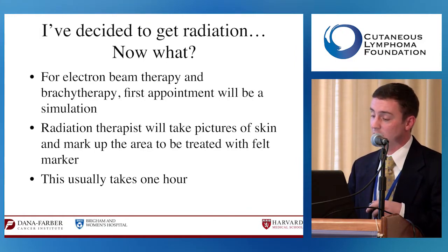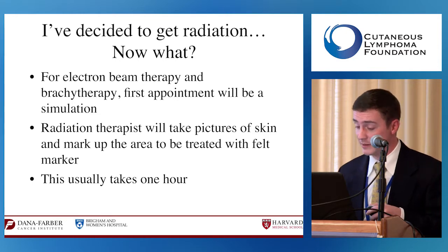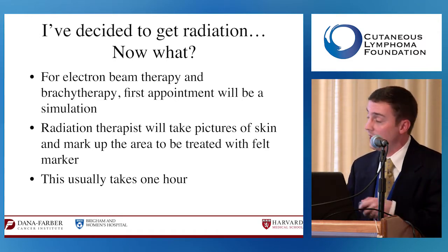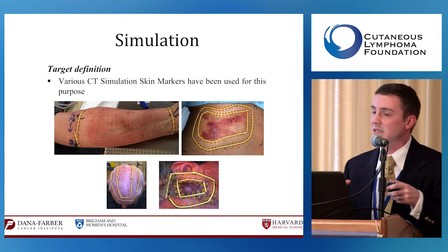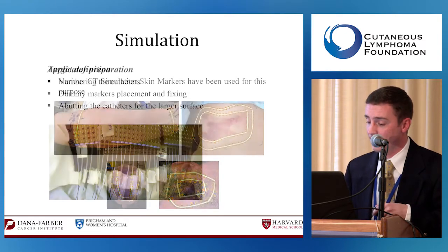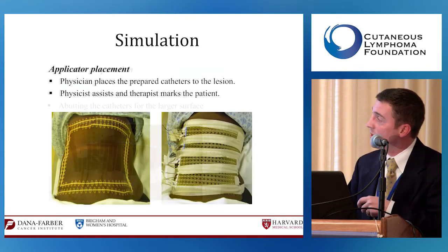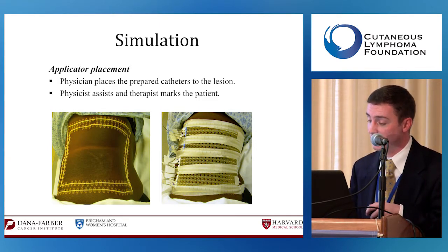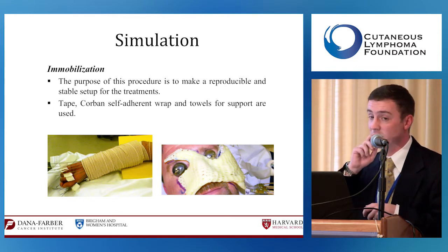For both electron beam and brachytherapy, the first appointment is a simulation, where the radiation therapist takes pictures of the skin and simulates what the treatment day will look like—usually one hour. Stickers mark the clinically affected area, with about a two-centimeter margin added for potential subclinical spread. For brachytherapy, multiple catheters are aligned and secured so they don't move during treatment sessions. Protective shields or bandages are placed on areas where radiation should not reach.